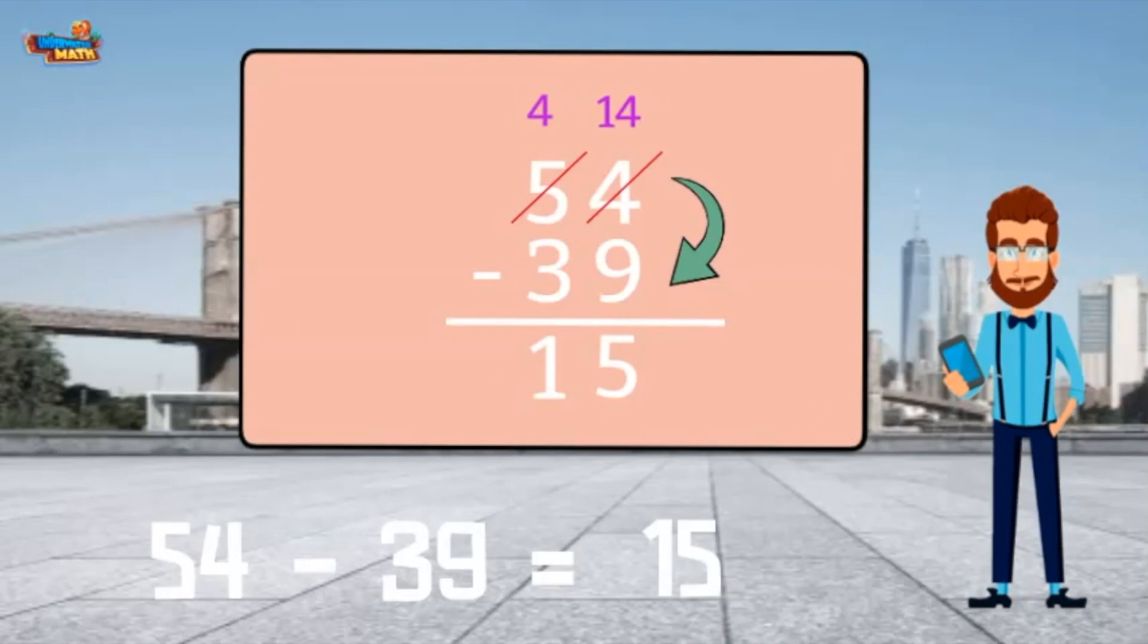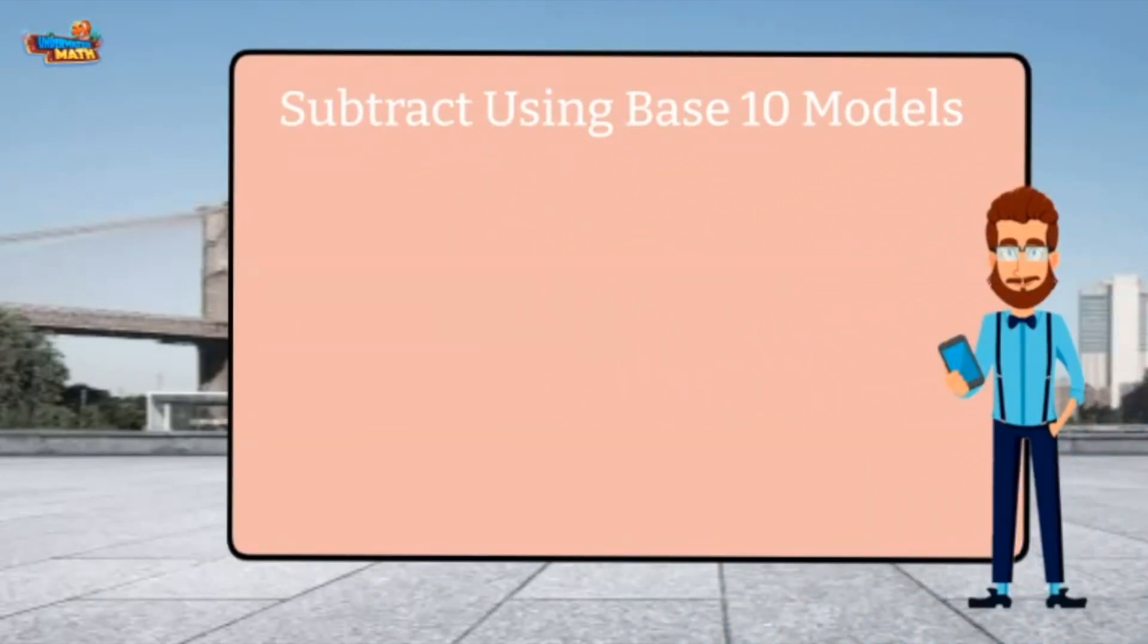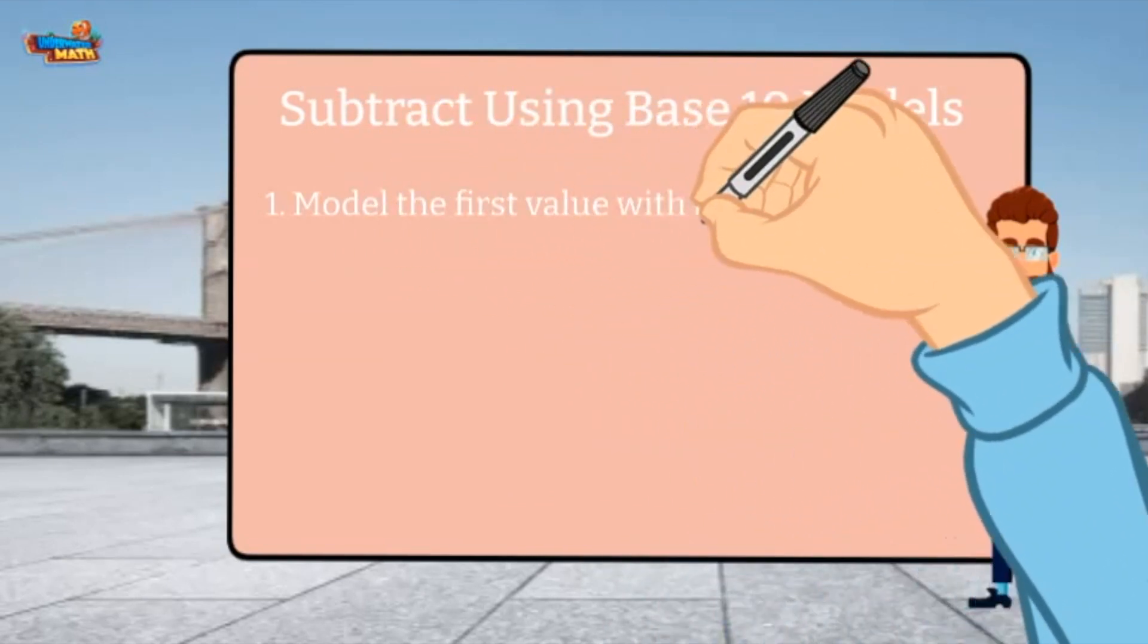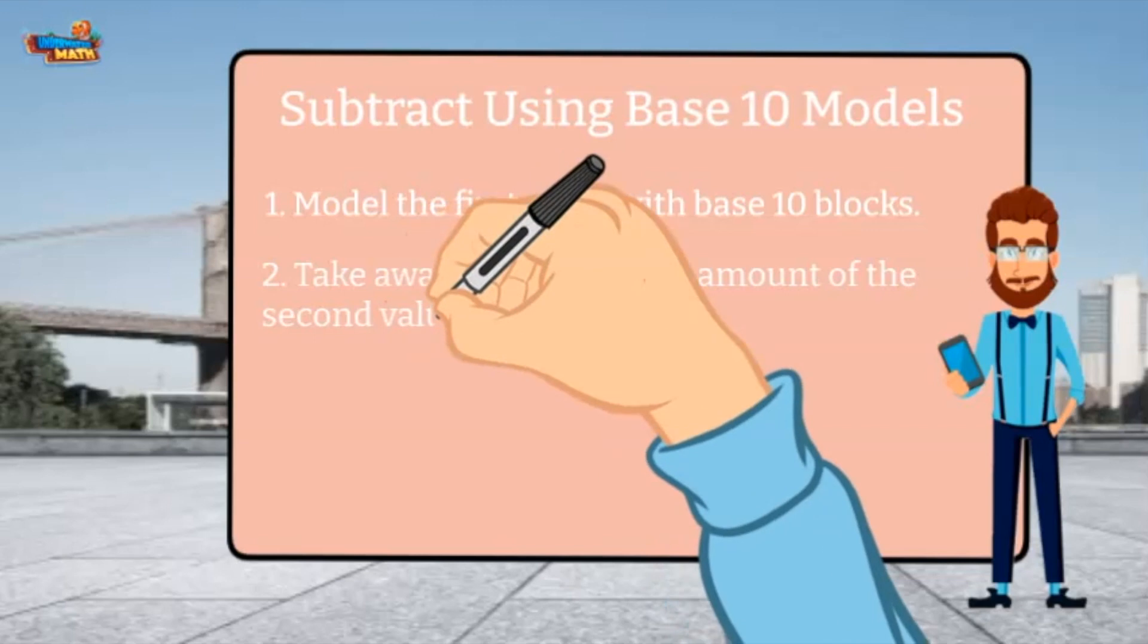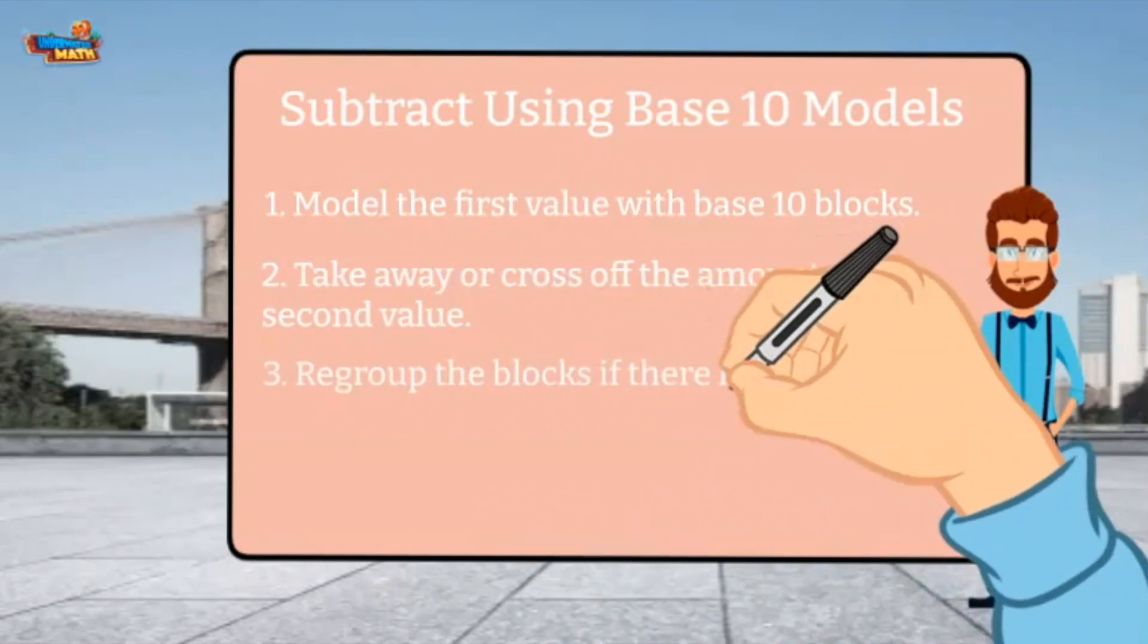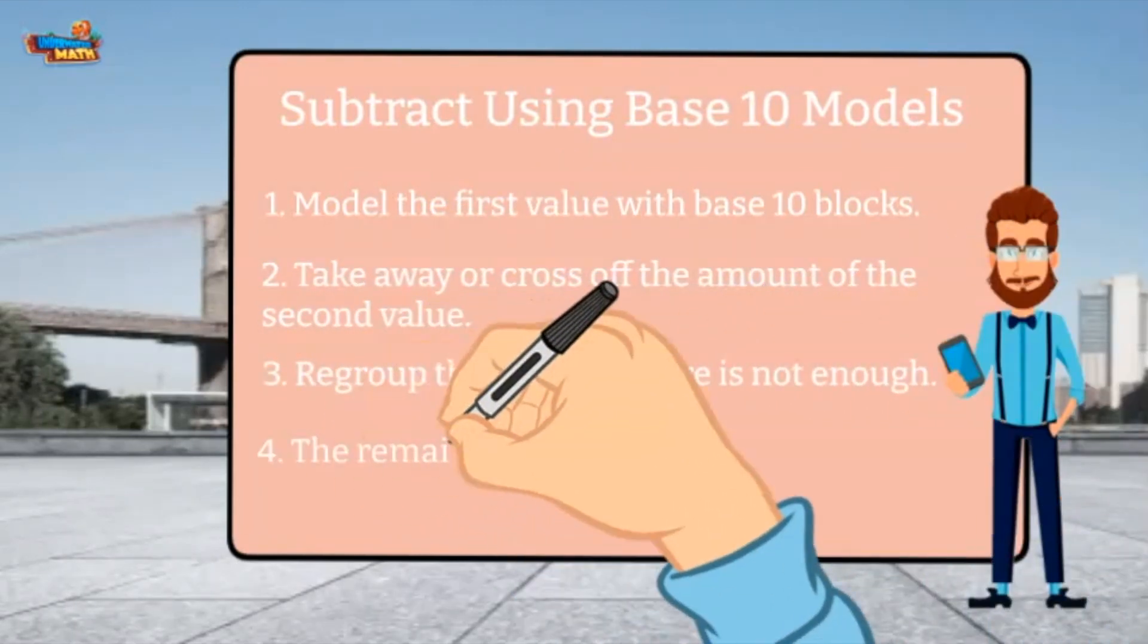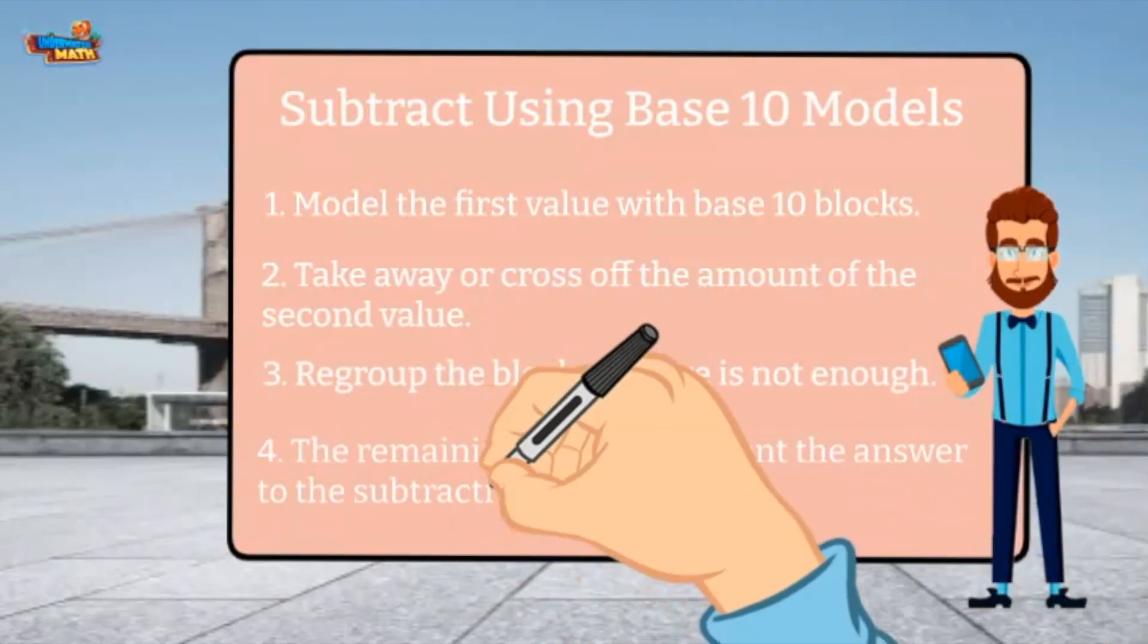I can also subtract using base 10 models. Here are the steps. Model the first value with base 10 blocks. Take away or cross off the amount of the second value. Regroup the blocks if there is not enough. The remaining blocks represent the answer to the subtraction equation.